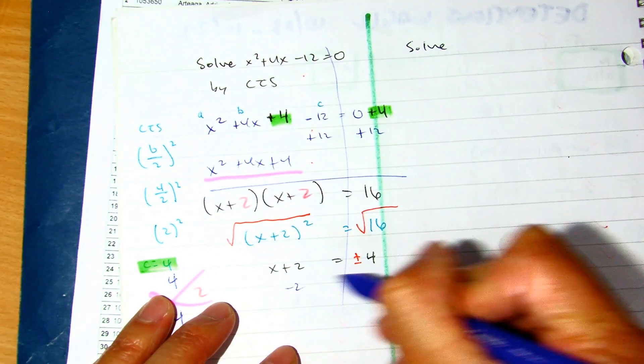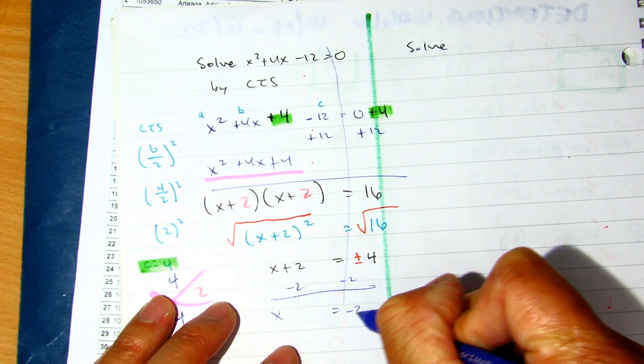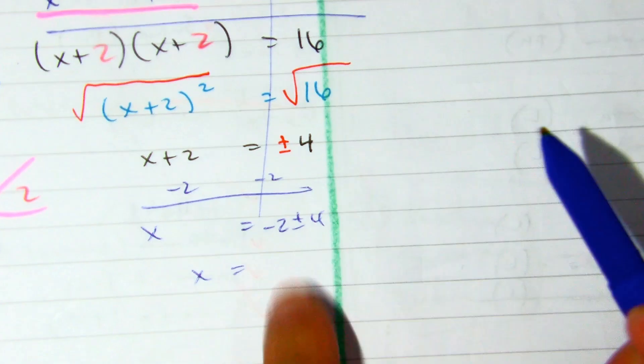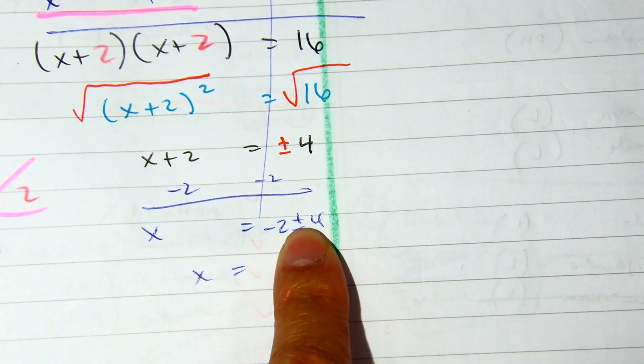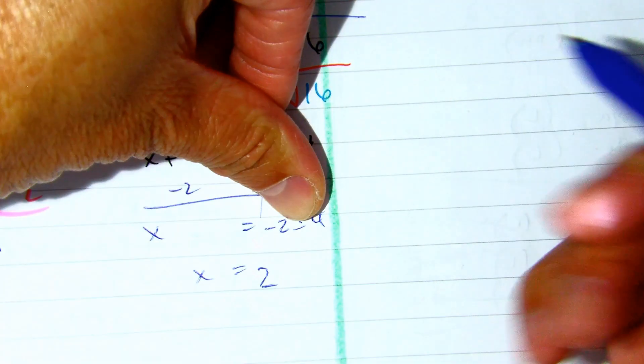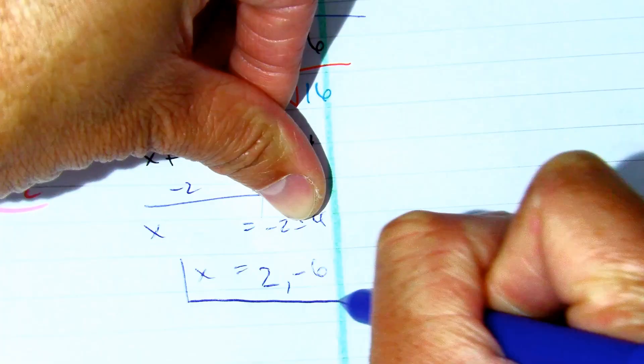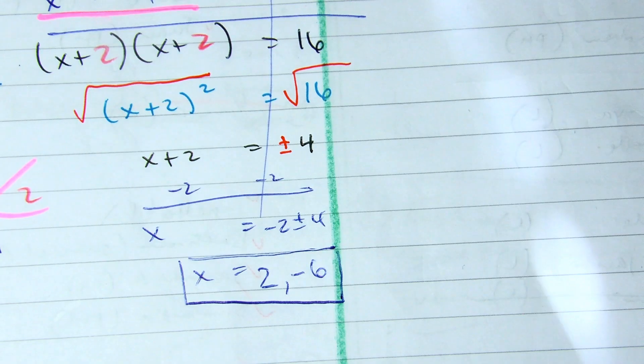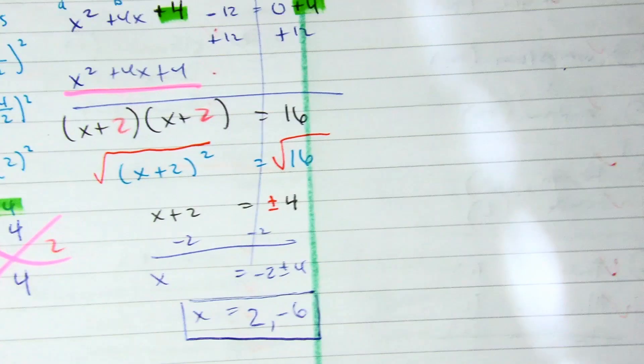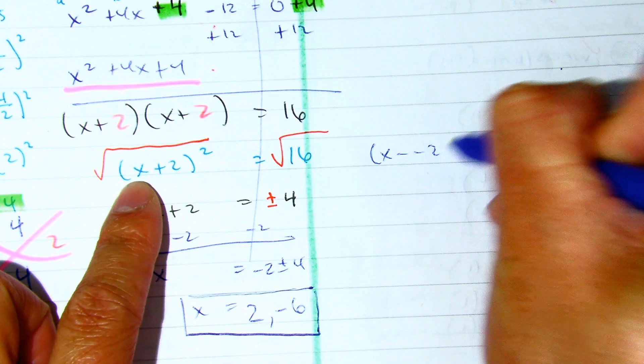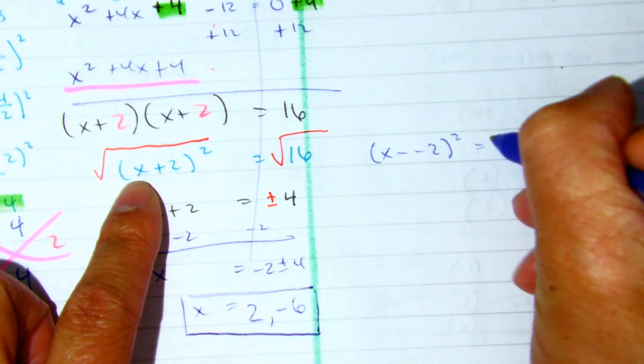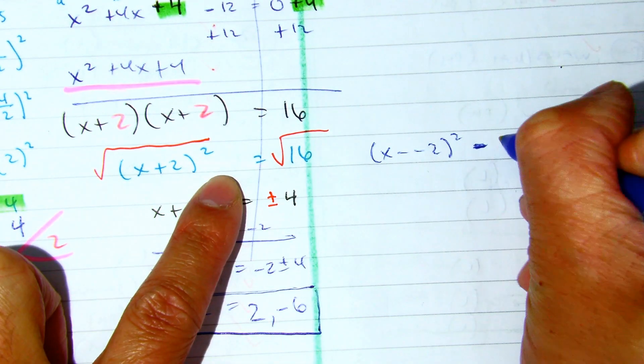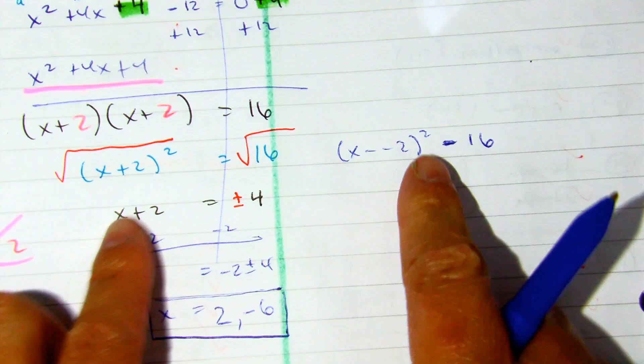Okay, so I subtract 2. x = -2 ± 4. So -2 + 4 is 2. -2 - 4 is -6.